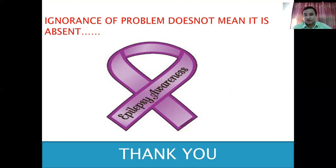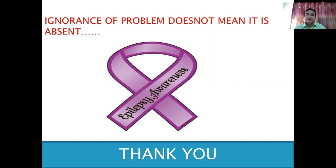Let us revise what we have learned today. Seizure is a hypersynchronous abnormal excessive epileptical activity. Epilepsy is a tendency to have recurrent seizure attack, the etiology of which cannot be reverted. Status epilepticus is seizure lasting more than five minutes. Convulsion is the motor manifestation. We discussed etiology, types and clinical manifestations, investigations including when to do LP and MRI, treatment using levetiracetam, carbamazepine for focal onset and valproate, lamotrigine for GTCS, management of status epilepticus, and seizure in pregnancy. Thank you for your attention.